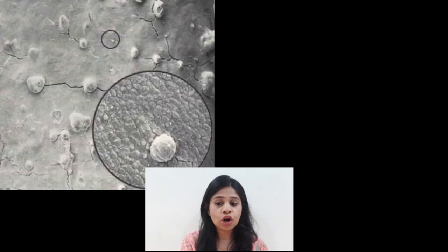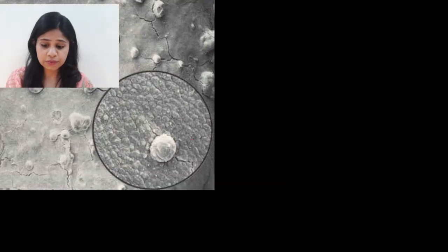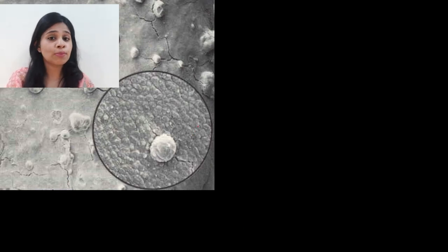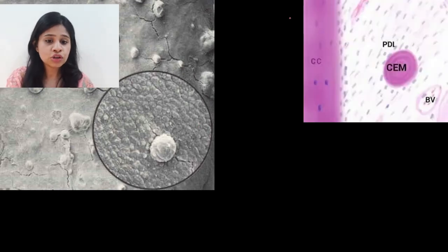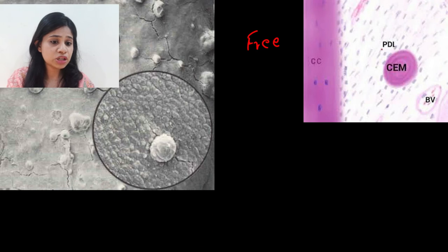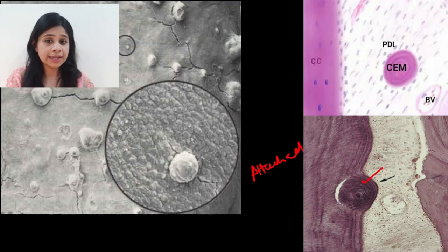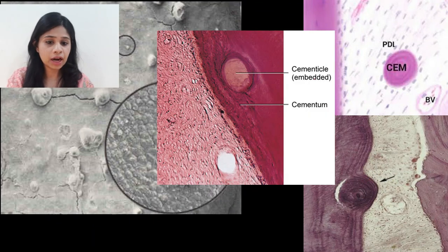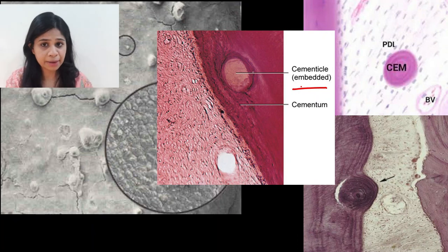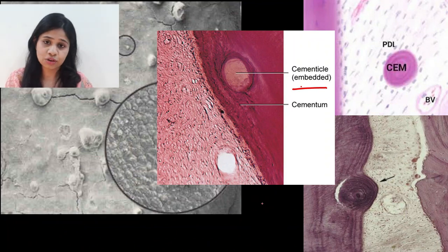Cementicals are globular masses of cementum found in the periodontal ligament space, in the cementum, or attached to the root surface. Based on location, they are classified into three variants: free cementicals, which are present in the periodontal tissue; attached cementicals, which are attached to the tooth root or cementum surface; and embedded cementicals, which are completely embedded into the cementum. Cementicals occur due to calcification of the epithelial cell rests of Malassez.